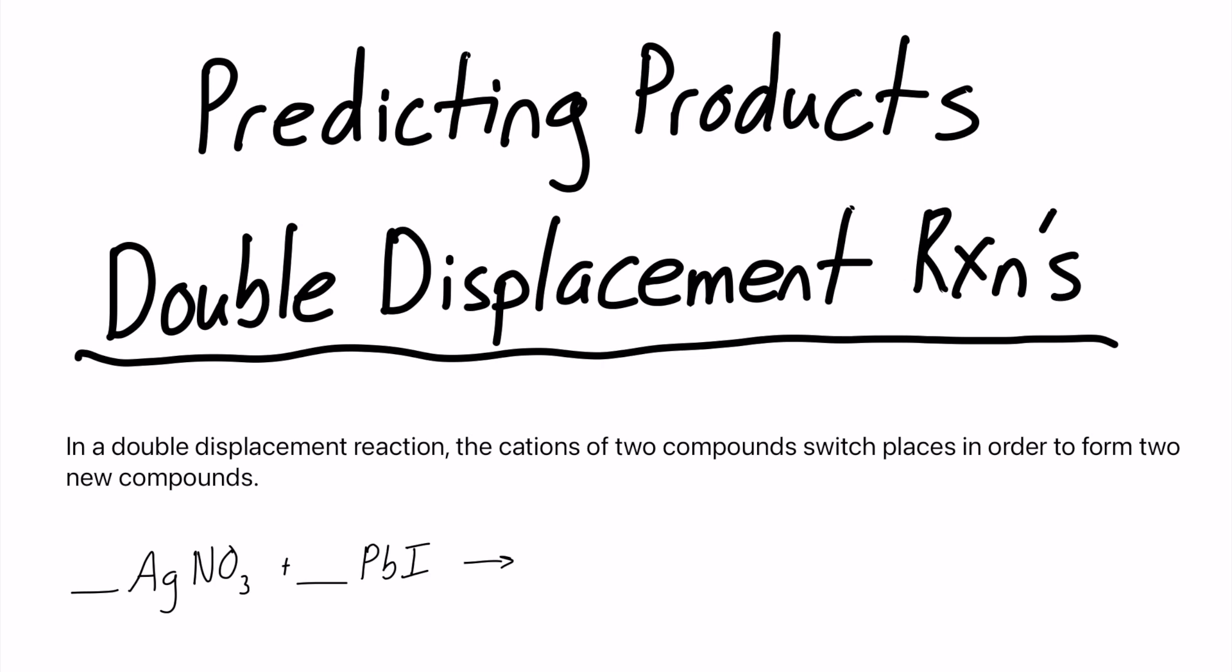So remember, the cations are the positively charged ions, usually metals. So in this case here, I'm actually going to make this lead-2. We have silver nitrate and lead-2 iodide reacting. And in this double displacement reaction, our two cations are going to actually switch places. So silver and lead-2 will switch places, forming compounds with the opposite anion here.